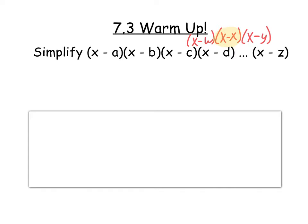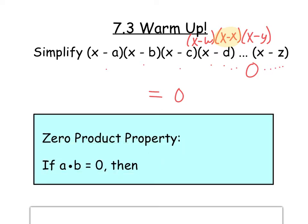x minus x actually equals zero. So if you're multiplying a whole bunch of things together and one of those things is zero, it doesn't matter what the other terms are — the answer is going to equal zero no matter what. If you multiply some things together and one of them is zero, the answer stays zero. This is a little introduction and review of the zero product property.